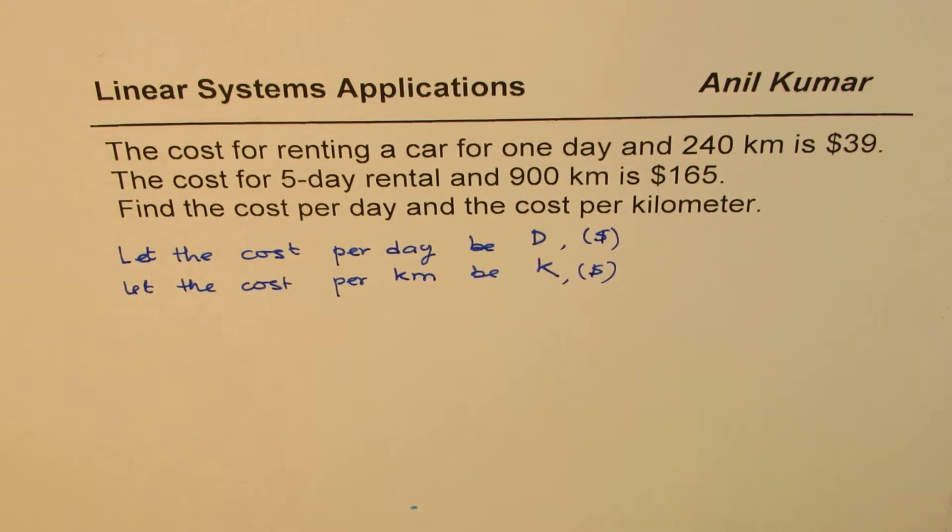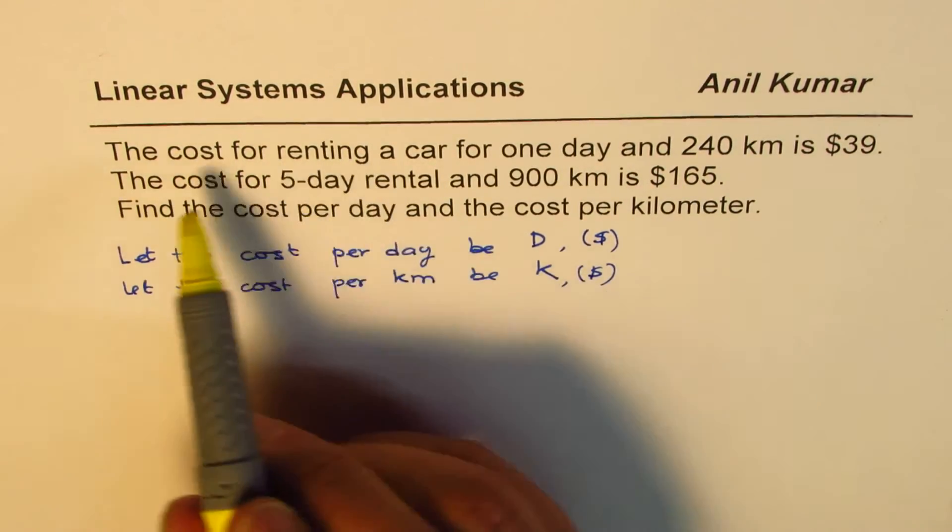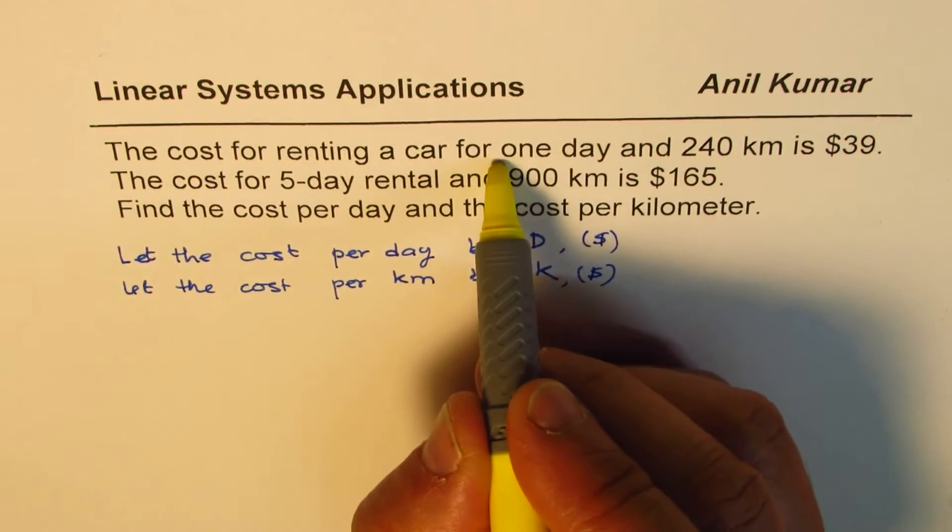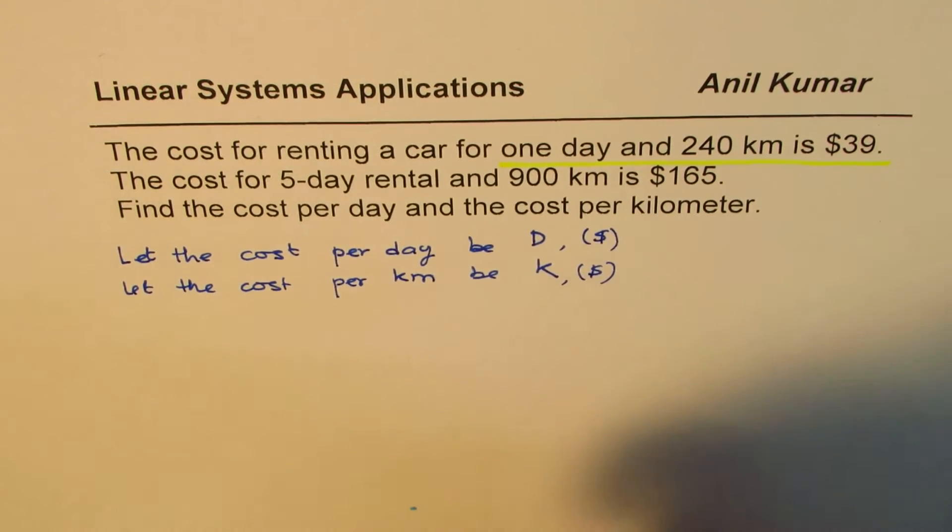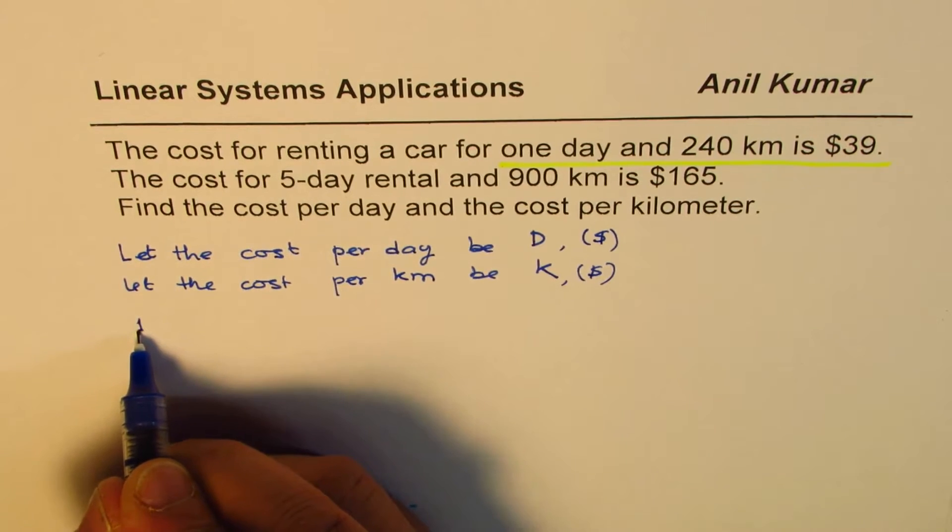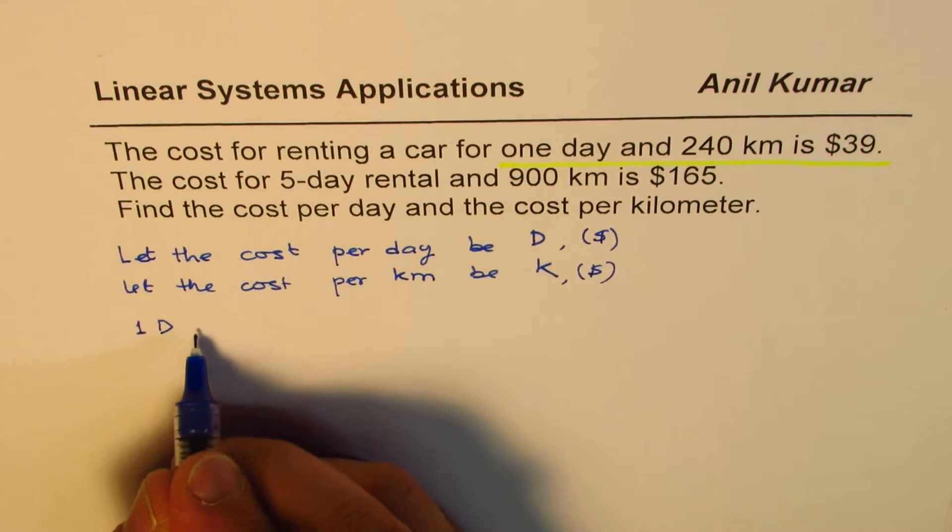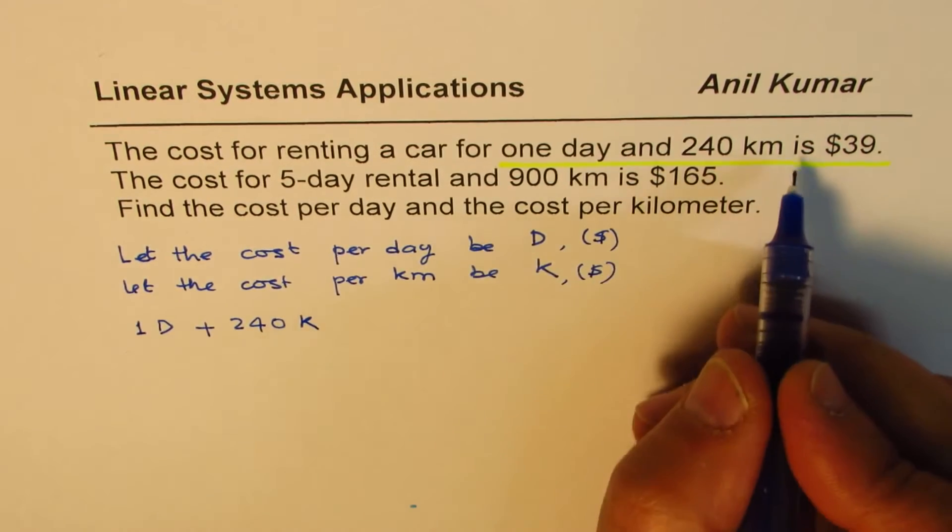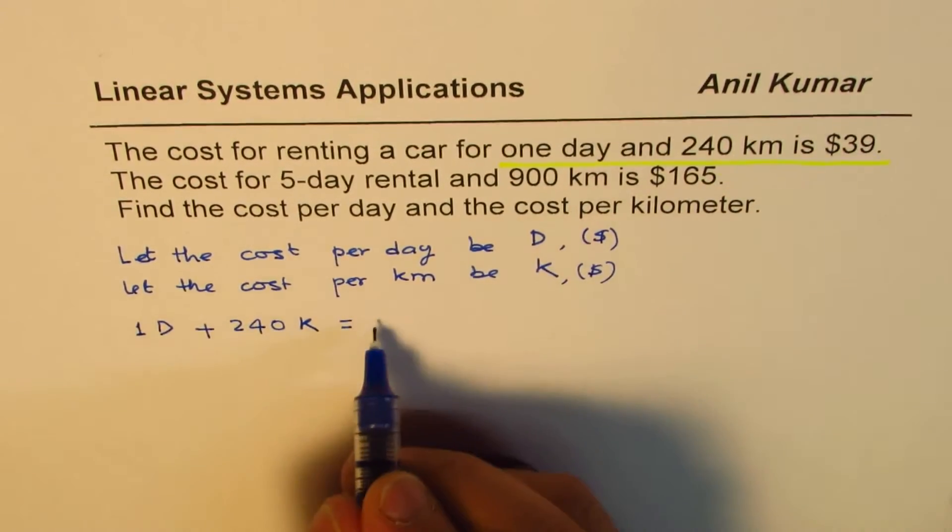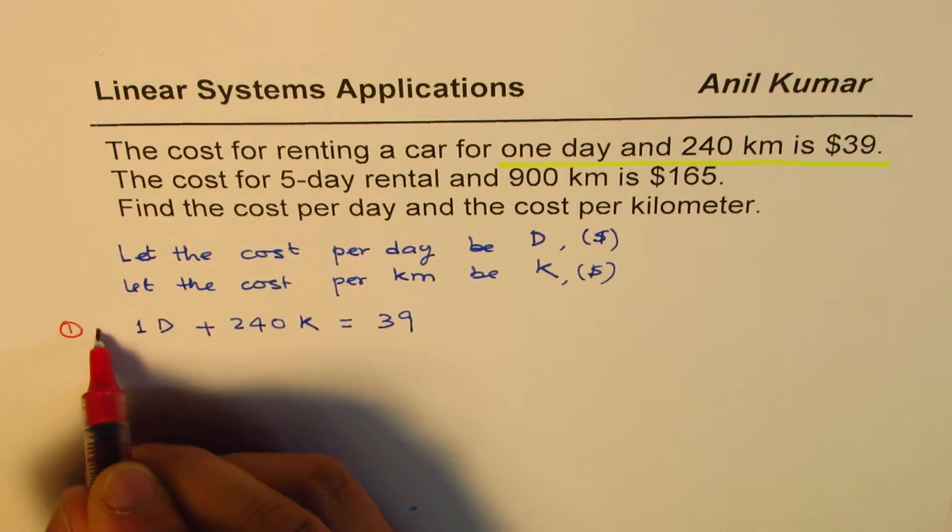Now, the second part is, as soon as we read our statements, we can write them as an equation. Statement number one is: cost for renting a car for one day and 240 kilometers is $39. One day means 1 times D. And means plus 240 kilometers, so 240K equals $39. We know these costs are in dollars. That is how simple it is.